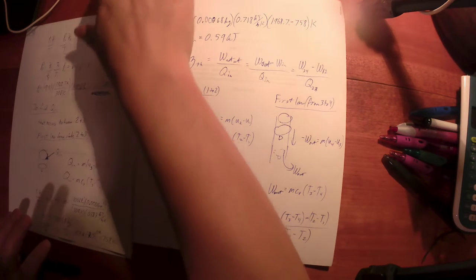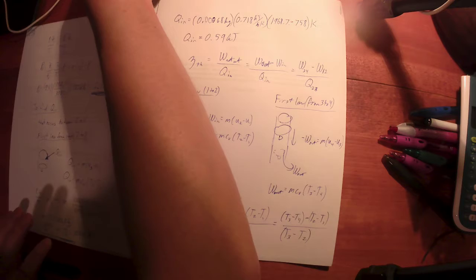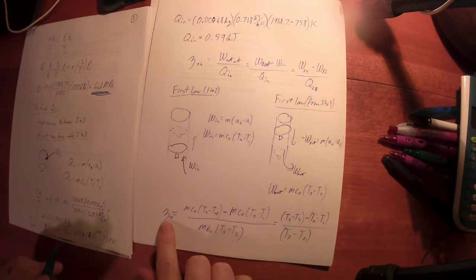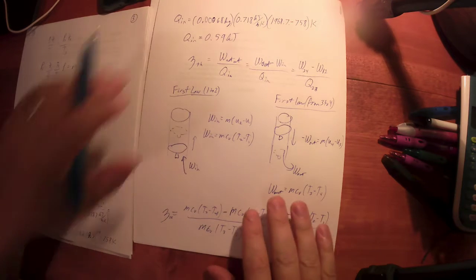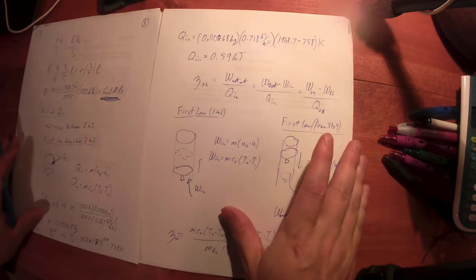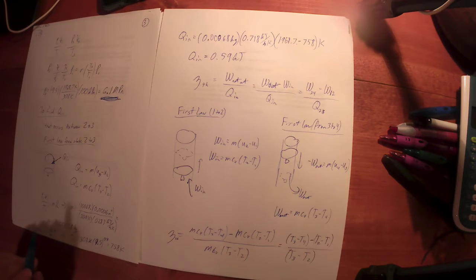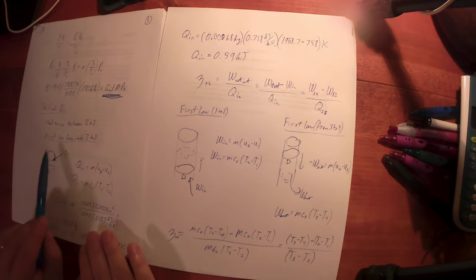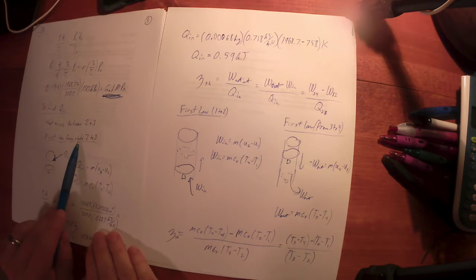All right, so we said this is kind of the hard way to find the efficiency, but this works. The reason I want to show you this is because I want you to understand the process to find the energy that occurs between any two states. We did that over here. We found the heat from state two to three just setting up a first law.